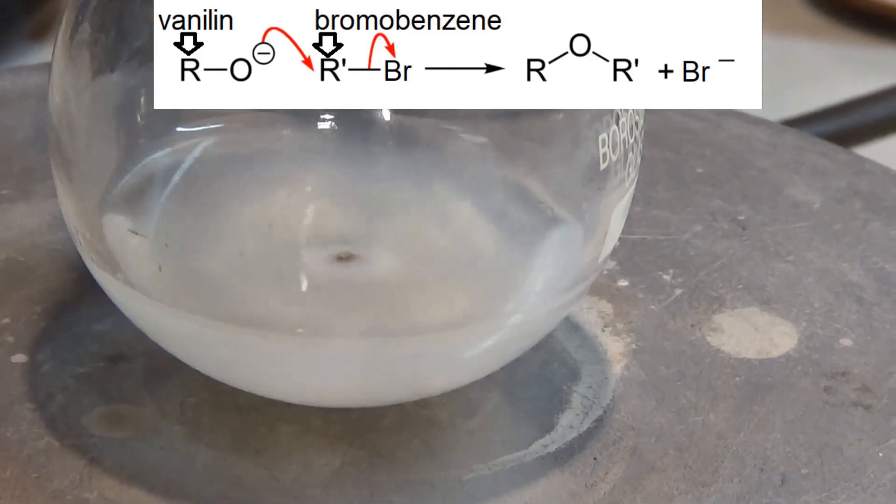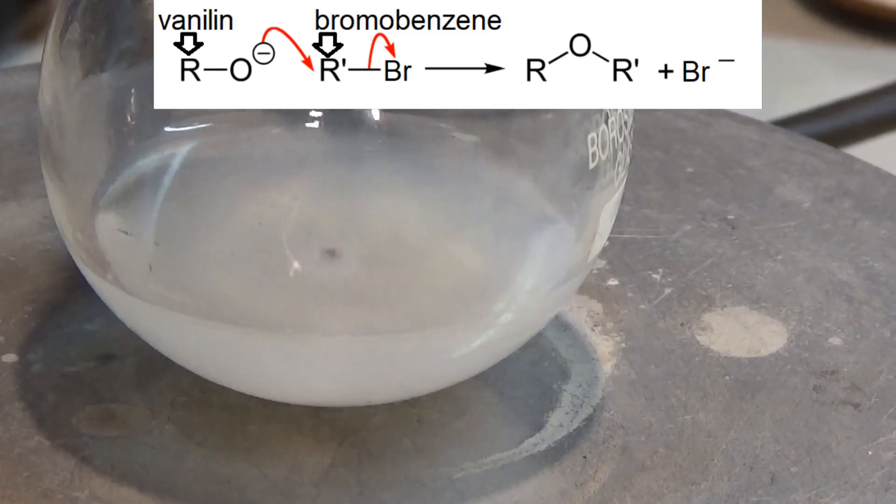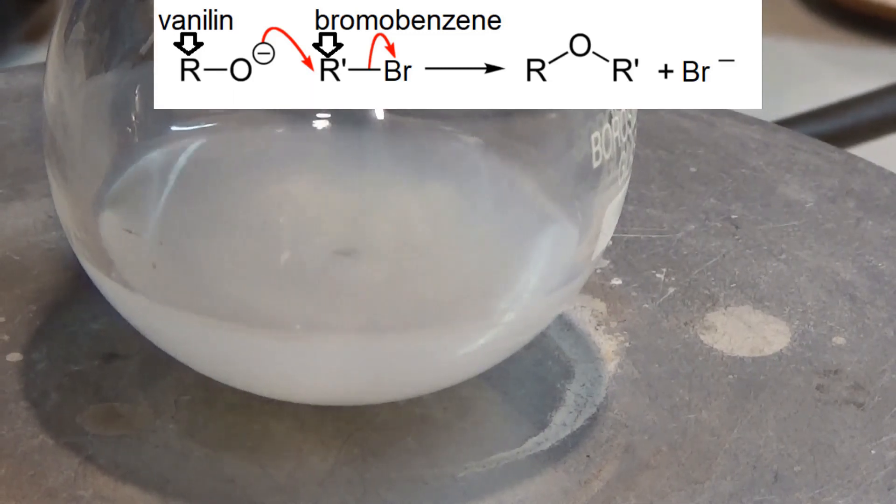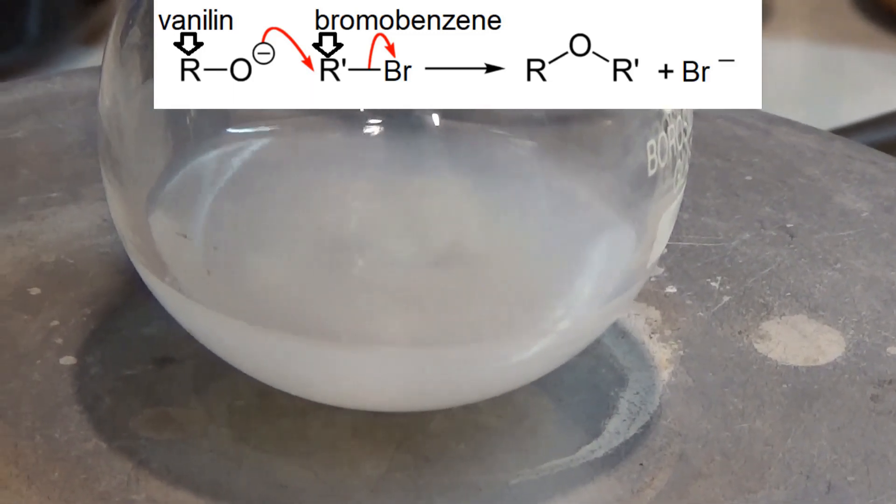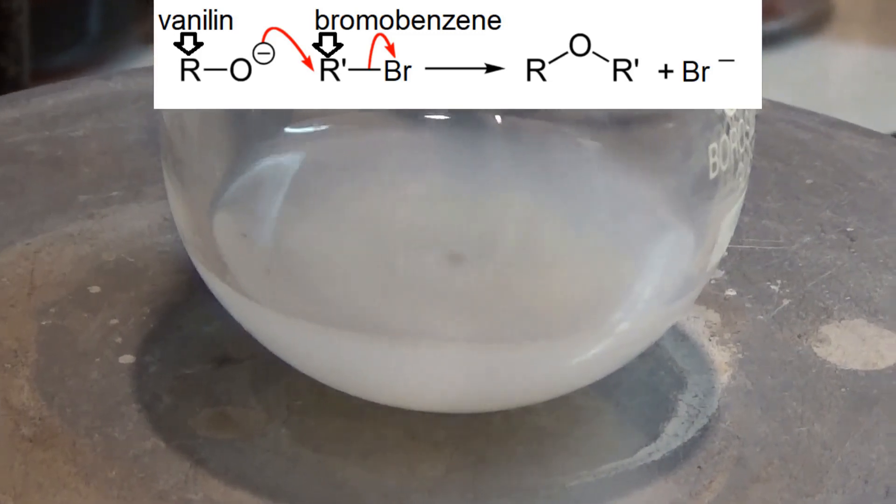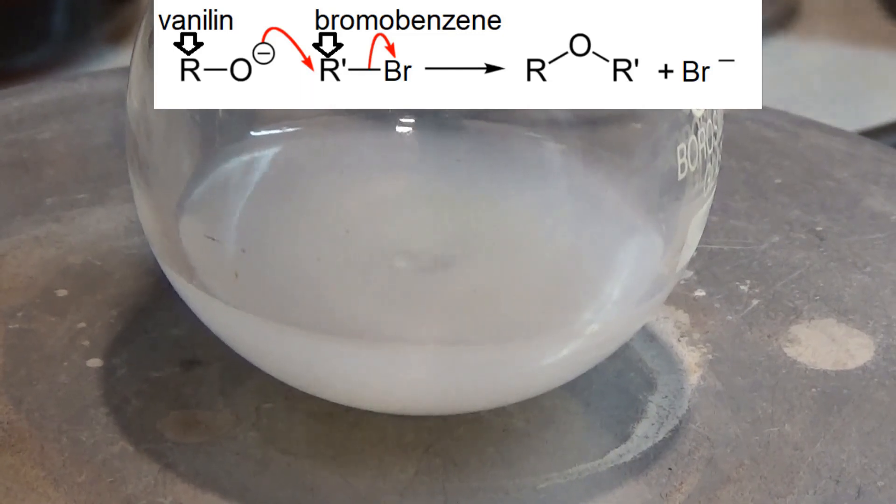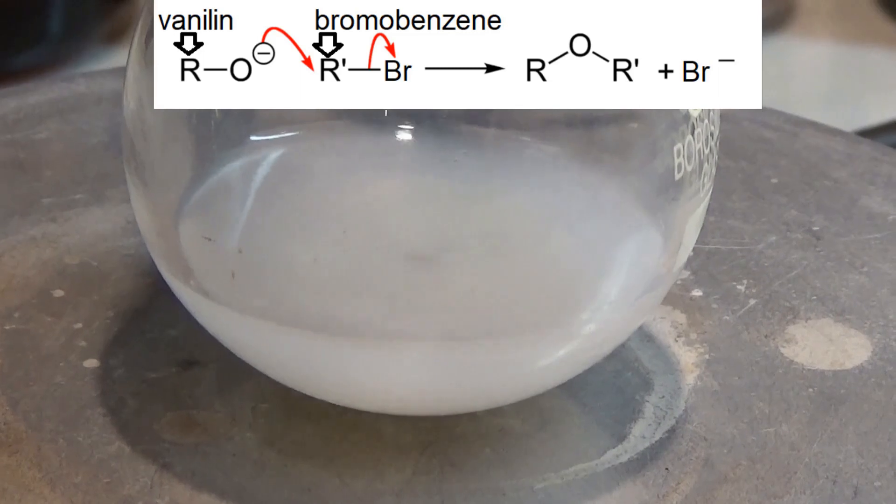This reaction type that we are performing is the so-called Williamson ether synthesis. It is a special type of nucleophilic substitution wherein alkoxide acts as a nucleophile. In our case the sodium hydroxide reacts with the OH group of the vanillin and yields the alkoxide ions in situ.